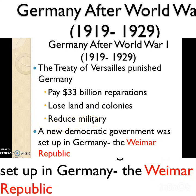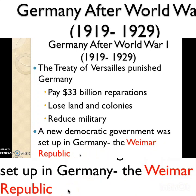Because of the Treaty of Versailles, a new government is set up in Germany, since the old one that led the war was not trusted. It's going to be a democratic government — meaning power to the people, where citizens can elect officials and vote on issues. This new democratic government in Germany is called the Weimar Republic. Note that the 'W' in Weimar is pronounced as a 'V' in German.